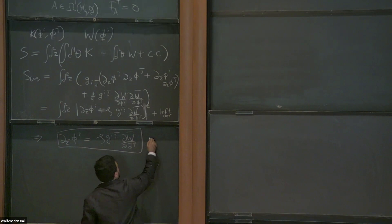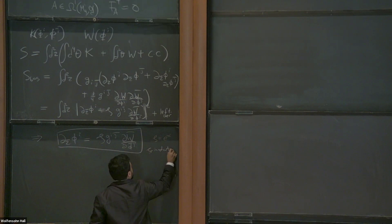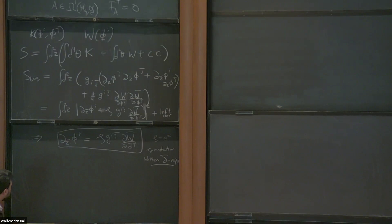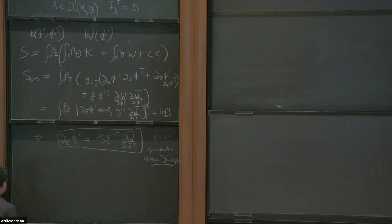This is what I'll call the zeta instanton equation — zeta is an arbitrary phase. It's also known as the Witten equation or Witten's del-bar equation. I believe Edward first wrote this down in the late 80s in a paper having to do with matrix models, although that was in a totally different context.